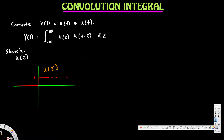Next we need to know what u(t minus τ) looks like. To do this, we first draw u(negative τ), and then we can shift it by t to get u(t minus τ). To sketch u(negative τ), it is just the opposite of u(τ) — if we turn u(τ) around, that gives us u(negative τ).